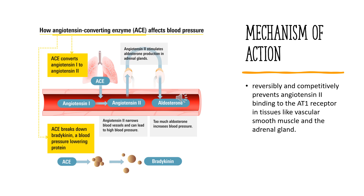Azulsartan selectively binds to AT1 receptors as an antagonist, blocking vasoconstrictor and aldosterone-secreting effects of angiotensin-2. Azulsartan has more than a 10,000-fold greater affinity for the AT1 receptor than for the AT2 receptor, which is predominantly involved in cardiovascular homeostasis. Azulsartan appears to dissociate from AT1 receptors much more slowly than other ARBs, which explains its longer duration of action when compared to other ARBs.